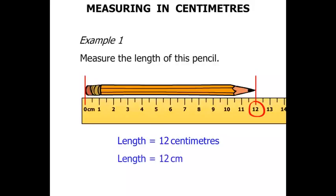And we can write that in a shorter way: the length equals 12 cm, where centimeters has simply been replaced with the shorter form cm. Terrific!